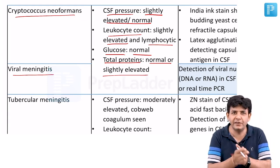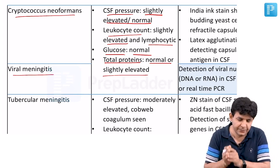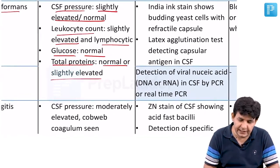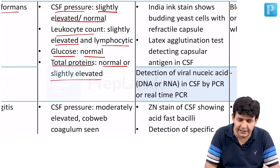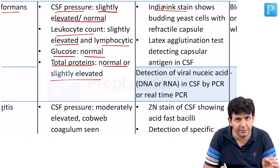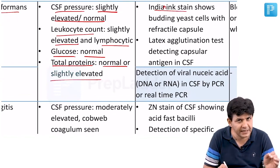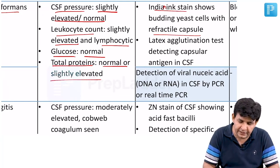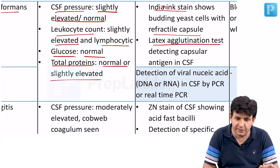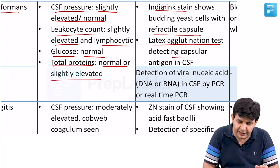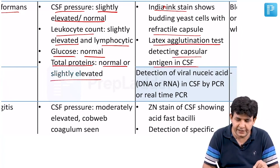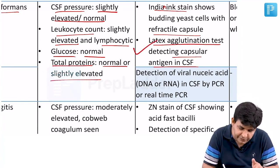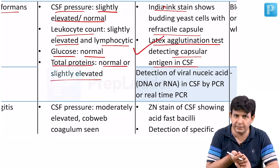Indian ink staining is done for Cryptococcus neoformans to visualize the capsule under microscope. The latex agglutination test is available for detecting capsular antigen in the CSF, and this latex card agglutination test is preferred for diagnosing cryptococcal meningitis.